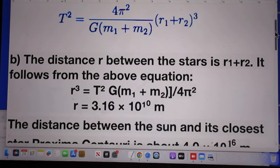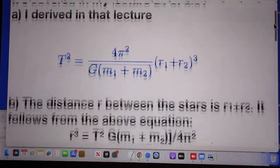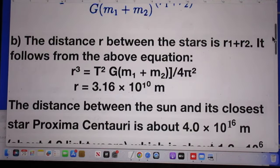The distance between the stars is R1 plus R2. If you don't understand why, go back to my lecture 24 and it will be crystal clear why that is the case.